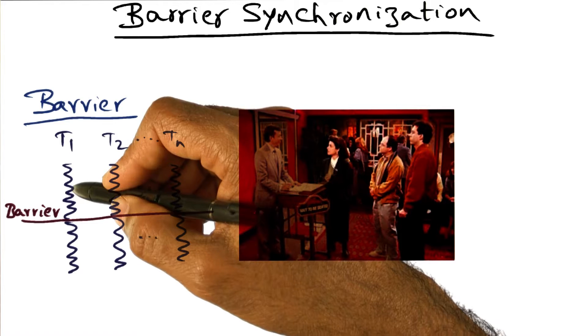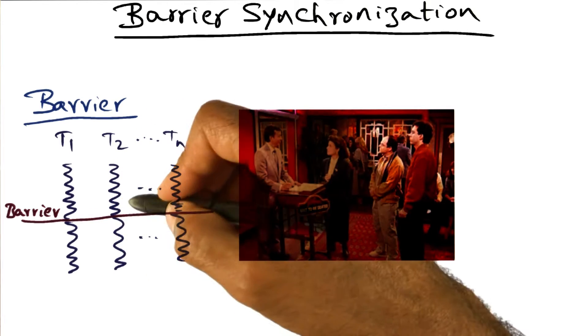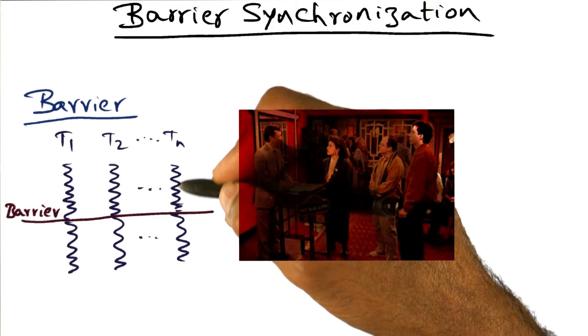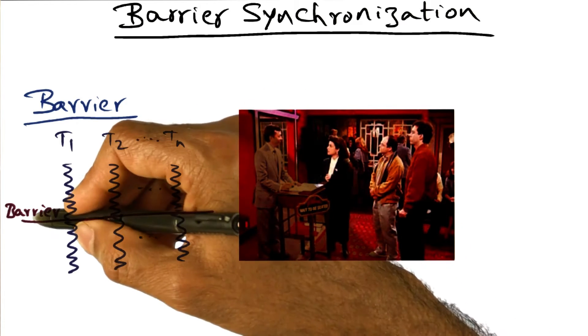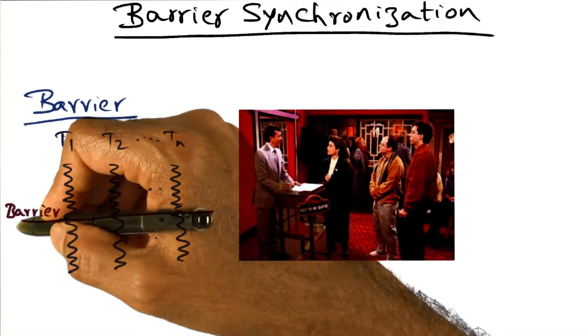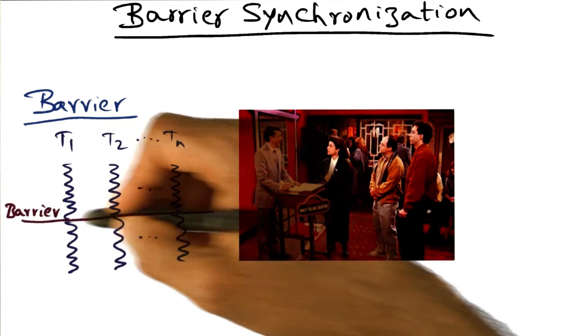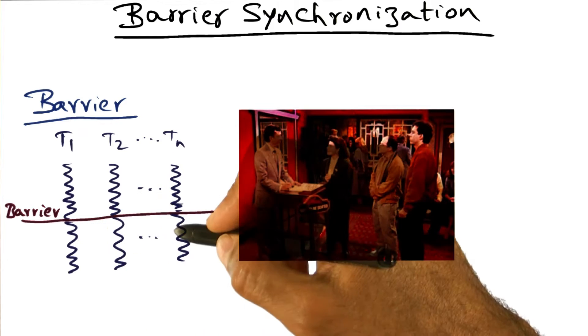So if T1 arrives at the barrier, it's going to wait until everybody else has come. One of the threads, maybe a straggler, is going to come a little later. In that case, everybody has to wait until all the threads that are part of this application have arrived at the barrier, then they can move on.